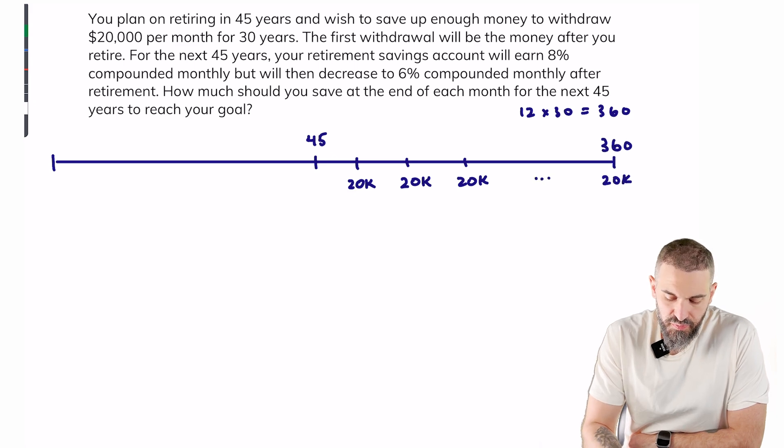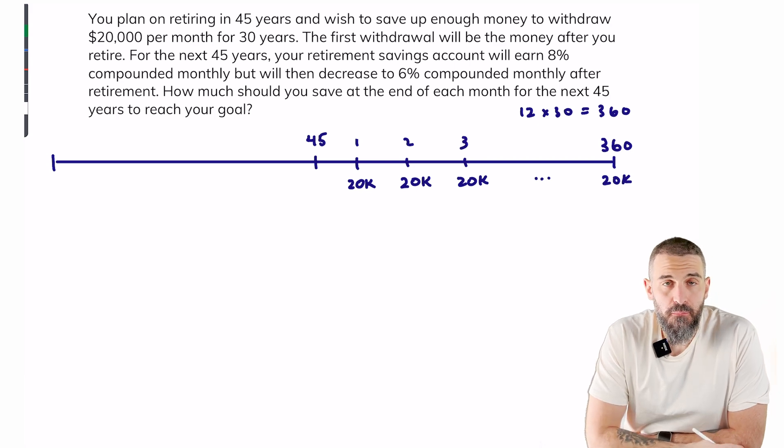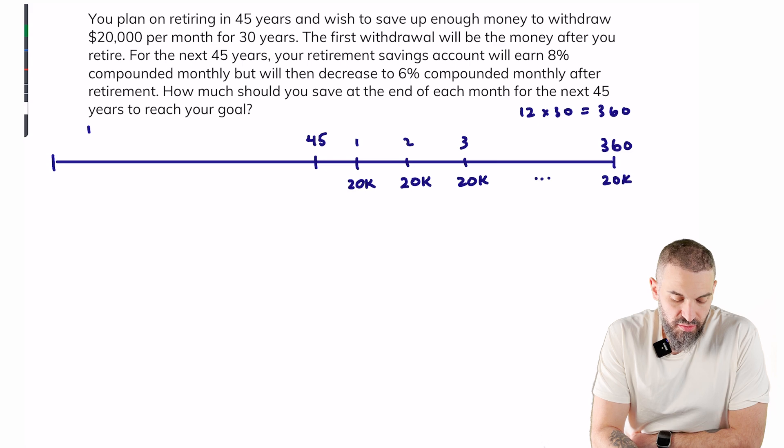So that'll be the last one, this will be the first, the second, the third, and so on. For the next 45 years, your retirement savings will earn 8% compounded monthly, but then will decrease to 6% compounded monthly after you retire.